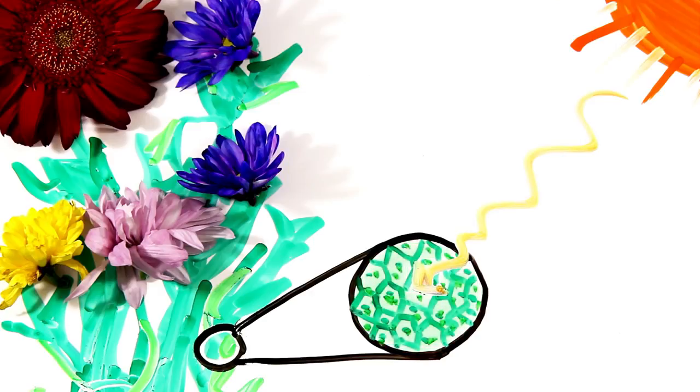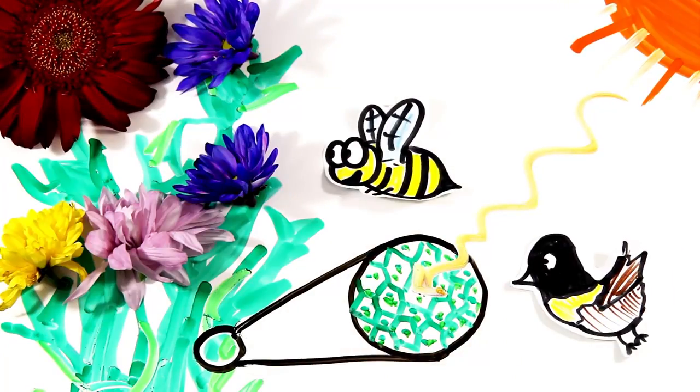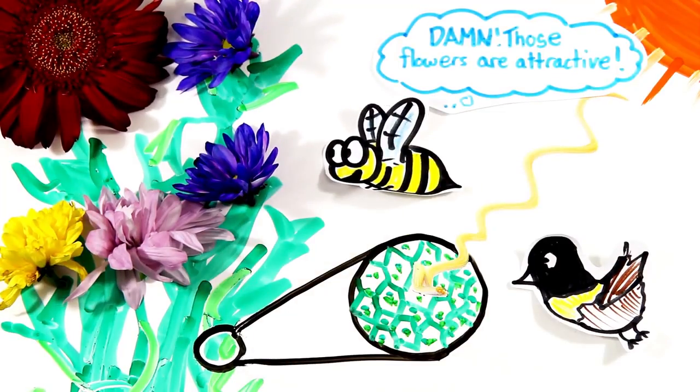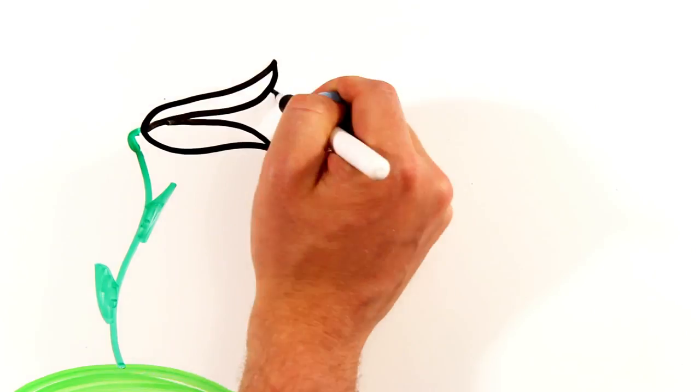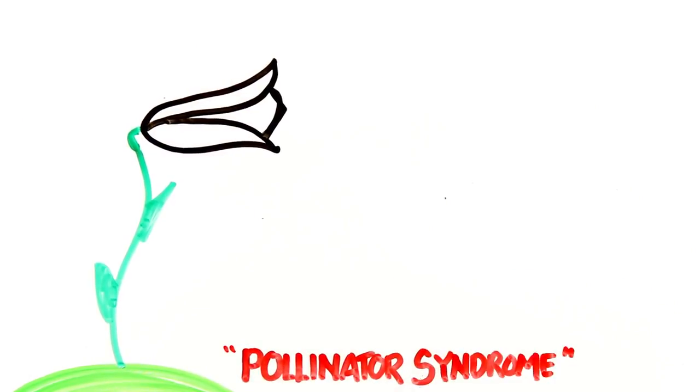So to effectively attract pollinators such as bees, insects, and birds, flowers have evolved to stand out against green. It's why you don't see many green flowers. And flowering plants have even evolved a suite of different colors to attract specific pollinators, known as pollinator syndrome.